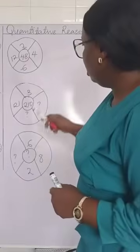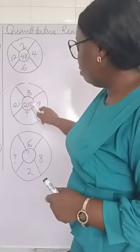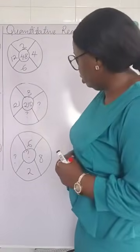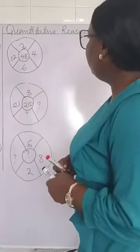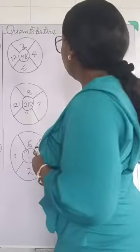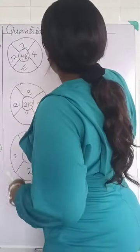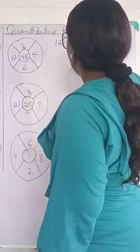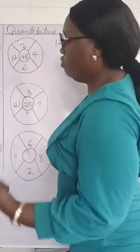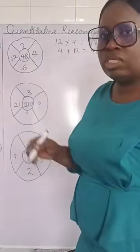So three times three gives us nine, and nine multiplied by 21 gives us 210 — automatically it's not the rule, we're not going to use it. Let's check another one: if we have 12 multiplied by 4 it will give us 48. So 12 times 4 gives us 48, and 4 times 12 will also give us 48.